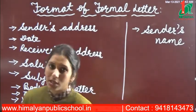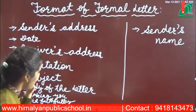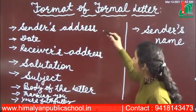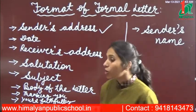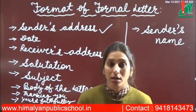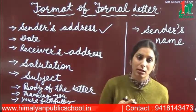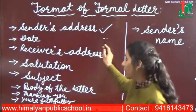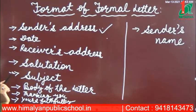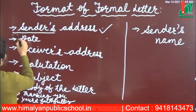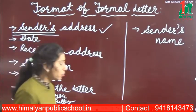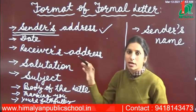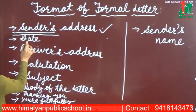What does the letter format contain? First of all, you have to write the sender's address. Who is the sender? If I am writing a letter to my principal, then I am the sender — so the sender's address will be my address. After that, you will write the date. Remember to leave a line space before the date. The sender's address goes first, then leave a line, then write the date. Today's date is what you will write.